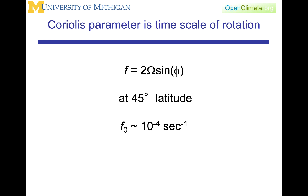You should recognize this as the same way that we treated angular momentum and the way that we got to the Coriolis parameter. We are interested in the component of the angular velocity in the local vertical. A natural time scale is the Coriolis parameter f, which is equal to 2 omega sine of the latitude. At 45 degrees latitude, f is often assumed to be a constant, approximately 10 to the minus 4 seconds to the minus 1. This is a characteristic time scale for rotation.